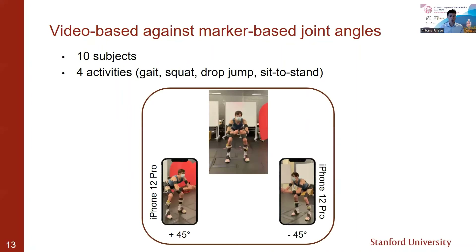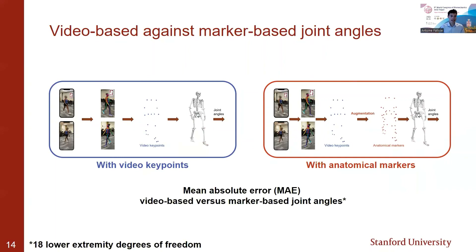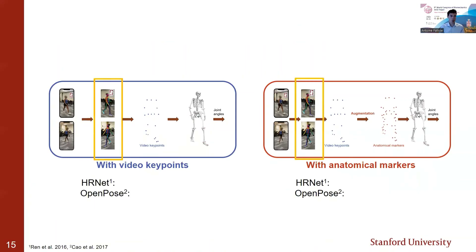At the same time, we collected videos from two iPhones positioned at plus or minus 45 degrees from the subject. From these videos, we estimated joint angles in two ways: first by using video keypoints, and second by using anatomical markers predicted from the video keypoints. We quantified the errors for 18 lower extremity degrees of freedom with respect to marker-based motion capture using mean absolute error, and we tested two pose detection algorithms: OpenPose and HRNet.